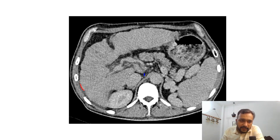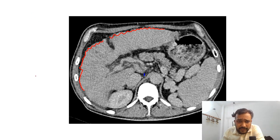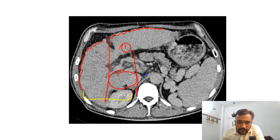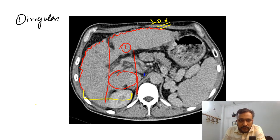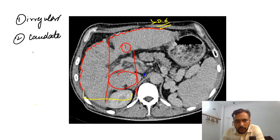Moving on to the next image — here we can see that the surface of the liver is irregular and nodular in outline. We can also see that the ratio of the quadrate lobe of the liver to the right lobe is more than 0.6. When you see an irregular nodular outline of the liver along with hypertrophy of the caudate lobe where the caudate-to-right lobe ratio is more than 0.6, you are going to think of chronic liver disease.